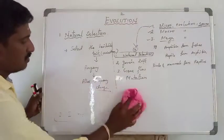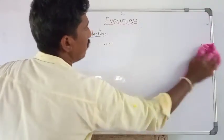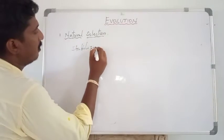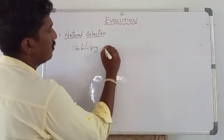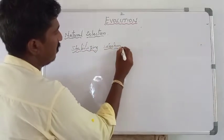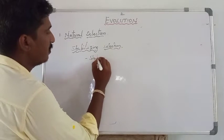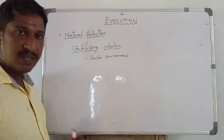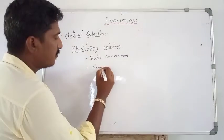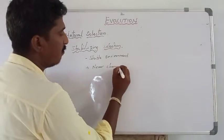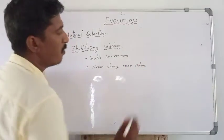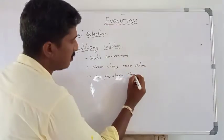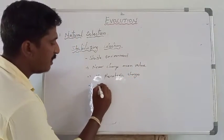The first one is stabilizing selection. Stabilizing selection mostly operates in a stable or constant environment. In this type of selection, the mean values are selected, so the mean value never changes in a population. There are no phenotypic changes and no speciation happens in the population.